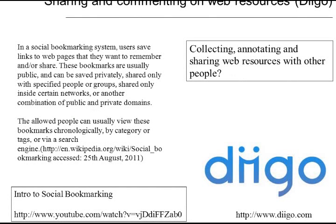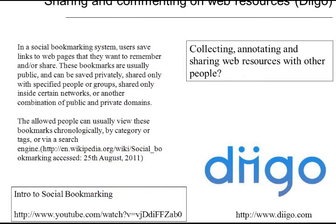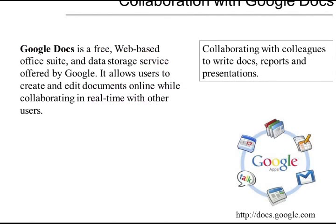Then we looked at Diigo — dealing with what we used to do on bits of paper or by email: collecting, annotating, and sharing web resources with people, which is increasingly common in group work. This would naturally develop into reflective writing and note-taking. For instance, you've found resources, you're bookmarking and managing them, done some basic annotation, and you're sharing them within a group. You want to take it a step further — you've got Diigo, and then you're going to take it further into something like Mahara or Google Docs, which is like an online Word document where you can collaborate and share. A very, very powerful tool.